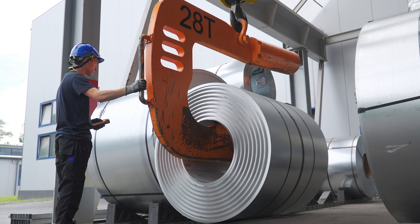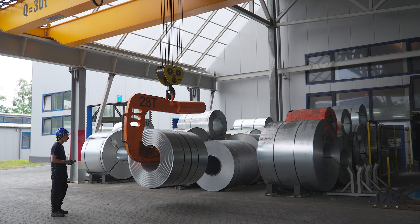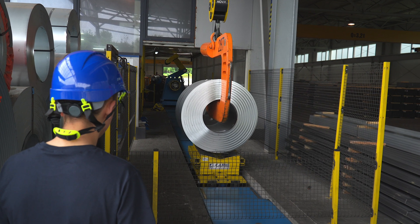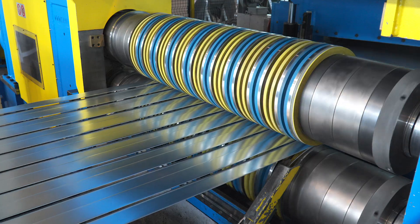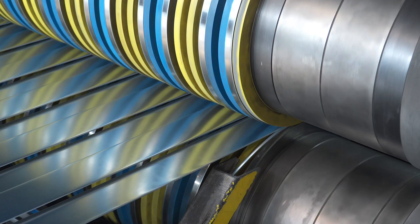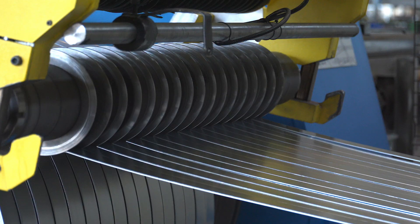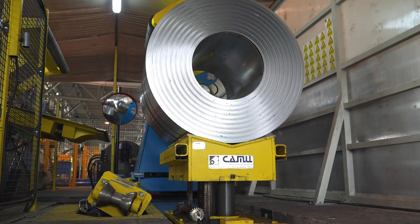Meanwhile, the raw material is prepared on the slitting line. Here, sheet coils are cut into strips of different widths, depending on the profile to be made. Sheet metal from one to five millimeters thick and coils weighing up to 30 tons can be cut here.